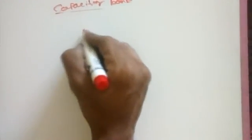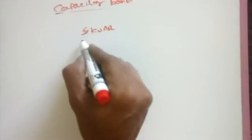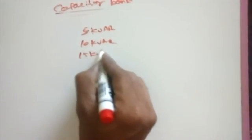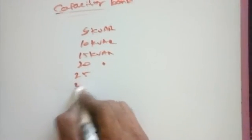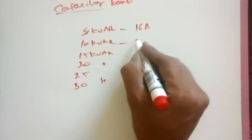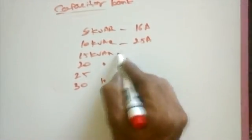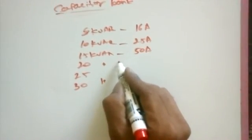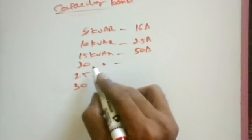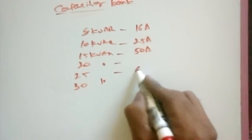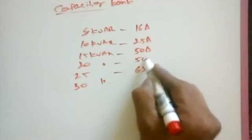First one is 5 kVR in first step, 10 kVR, 15 kVR, 20 kVR, 25 kVR. In 5 kVR we choose 25 ampere fuse link. In 10 kVR we choose 50 ampere fuse link. In 15 kVR we choose 50 ampere fuse link. In 25 kVR we choose 63 ampere. In 20 kVR we choose 50 ampere.